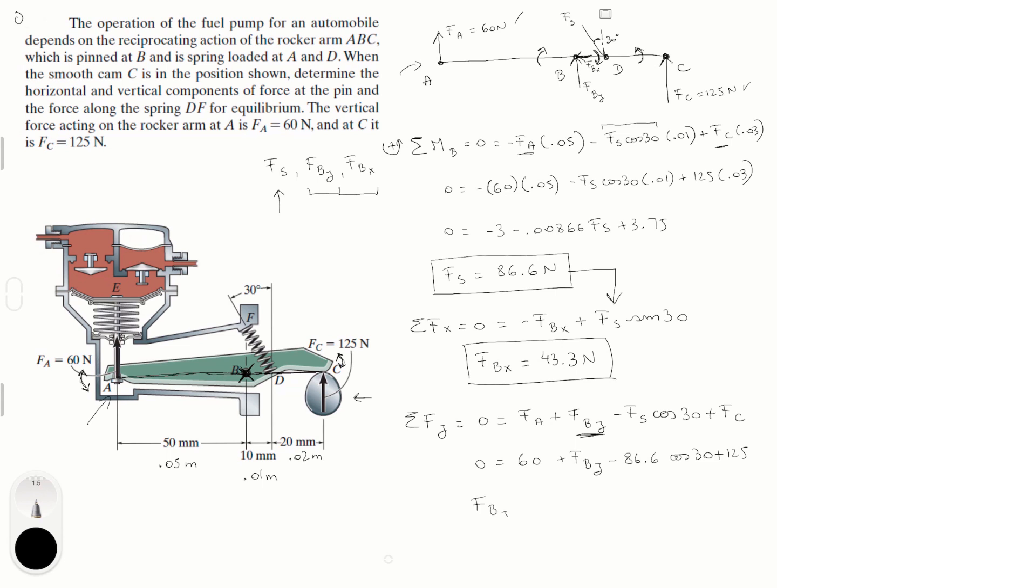So if you do some basic algebra and solve for F_B_Y, you're going to get that it is equal to negative 110 newtons. What does it mean that it's negative? Well, it simply means that I didn't guess right when I drew the diagram,